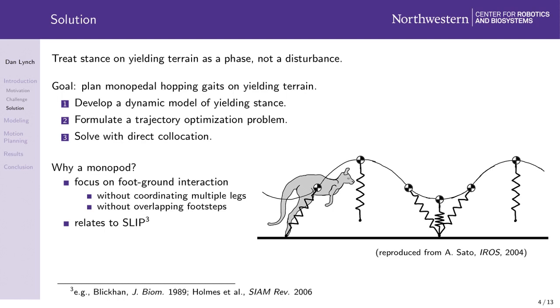Second, our monopod resembles the spring-loaded inverted pendulum template, which captures the center of mass motion of running bipeds and quadrupeds, and which has provided a basis for the control of many running and hopping robots. In fact, as we'll see soon, one of the exciting things about our framework is that it generates SLIP-like gaits, even though we make no assumption that this is necessarily the right way to hop on yielding ground.